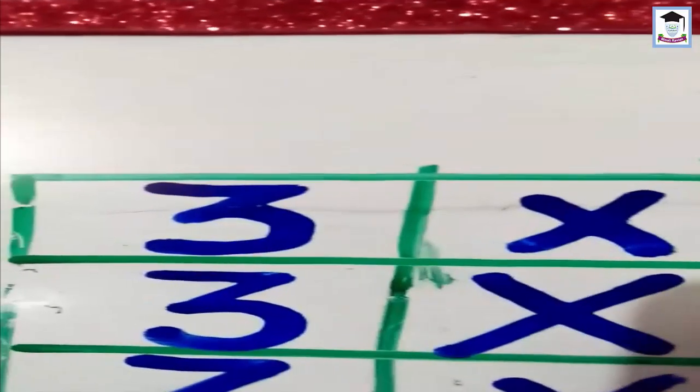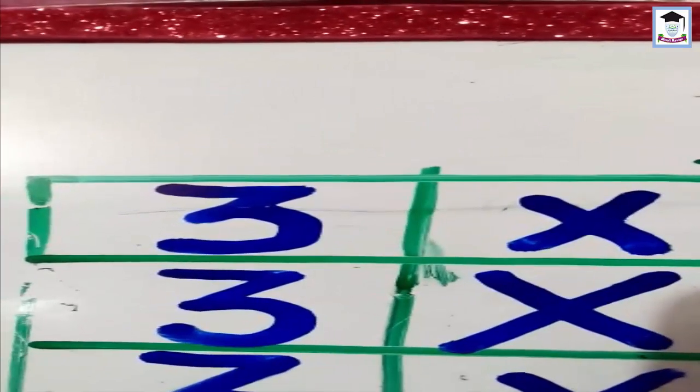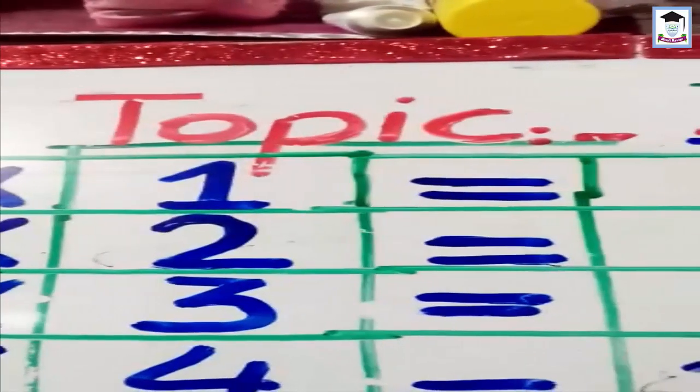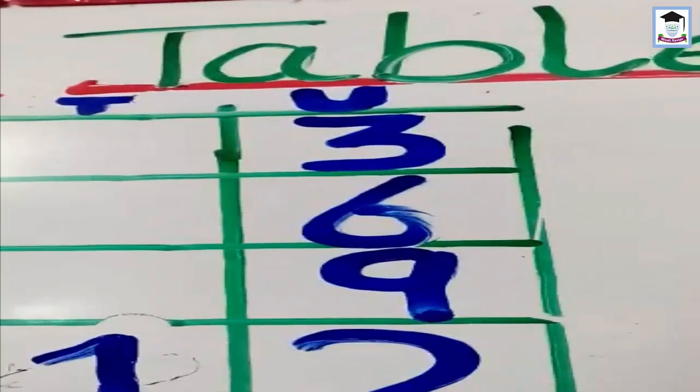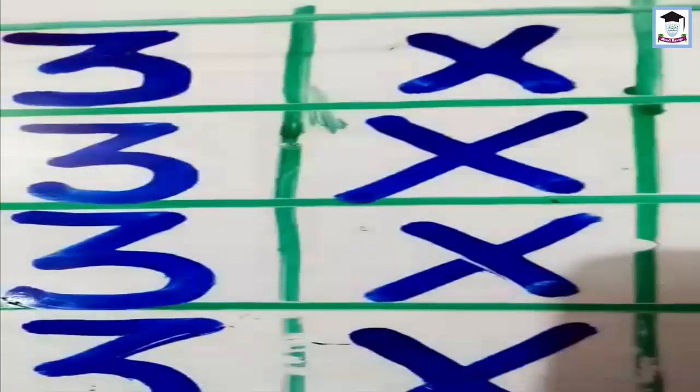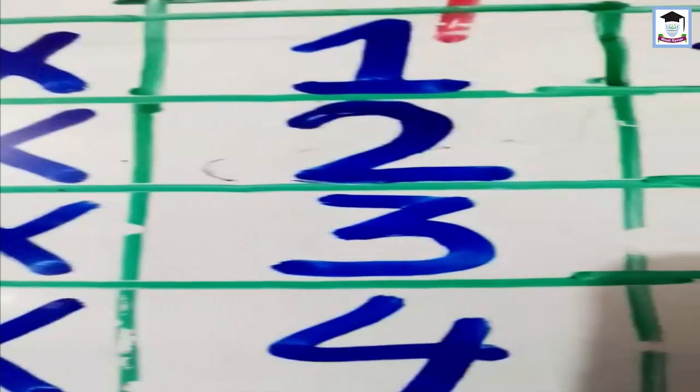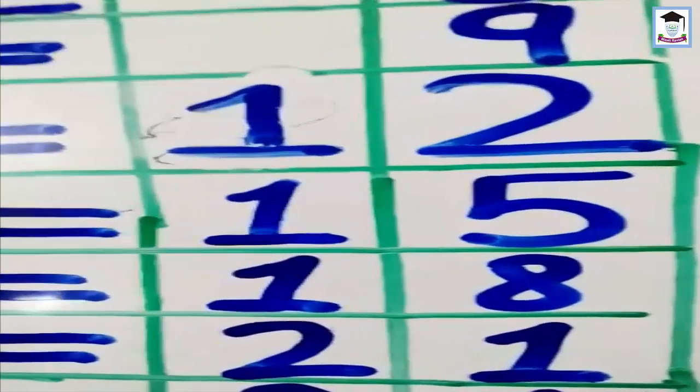Let's start. How we will run the table of three: 3×1=3, 3×2=6, 3×3=9, 3×4=12, 3×5=15, 3×6=18, 3×7=21, 3×8=24.